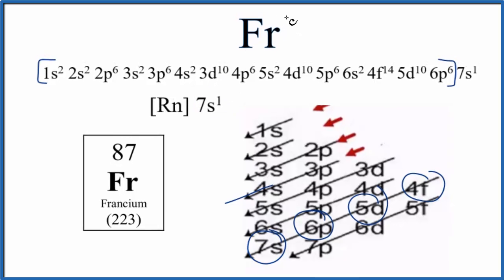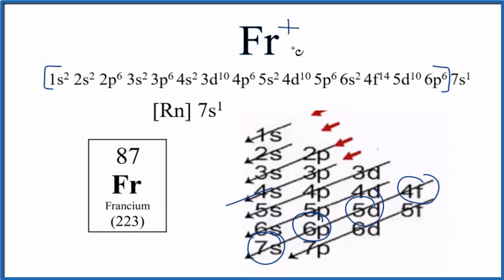If we wanted to write the ion, Fr+, all we'd do is we'd get rid of this last electron. For positive, we've lost an electron. So we get rid of the last electron. We can write 0. Some people cross it out. Don't include it. I like 0. Put a 0 here, too. So this would be the electron configuration for Fr+.